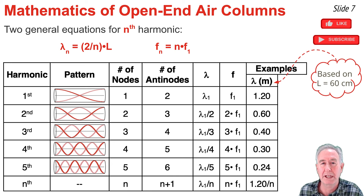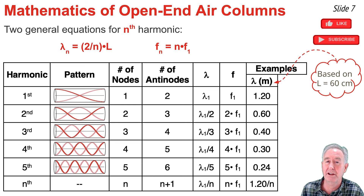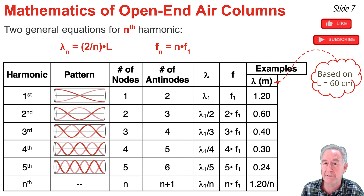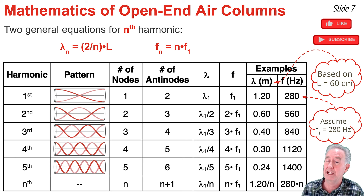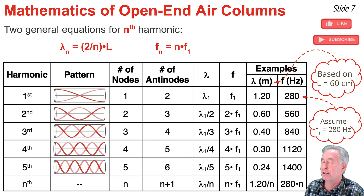For an air column with a length of 60 centimeters or 0.60 meters, the wavelength of the first harmonic is 1.20 meters. All other wavelengths are found by dividing 1.20 meters by two, by three, by four, and by five. For frequencies, assuming a first harmonic frequency of 280 hertz, we find all other harmonic frequencies by multiplying by two, three, four, and five to give the values shown.